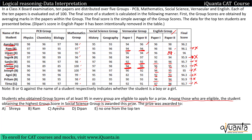Now only two students remain: Ayesha and Dipan. Ayesha in Social Science scores 95+93 divided by 2, which is less than 95 — so Ayesha is excluded. At last we are left with only Dipan. Dipan scores 98+98+98 in PCB — greater than 95. Mathematics is fine. Social Science 96+95 — greater than 95. Vernacular and English also greater than 95. So Dipan is awarded the prize — option D is the correct answer.